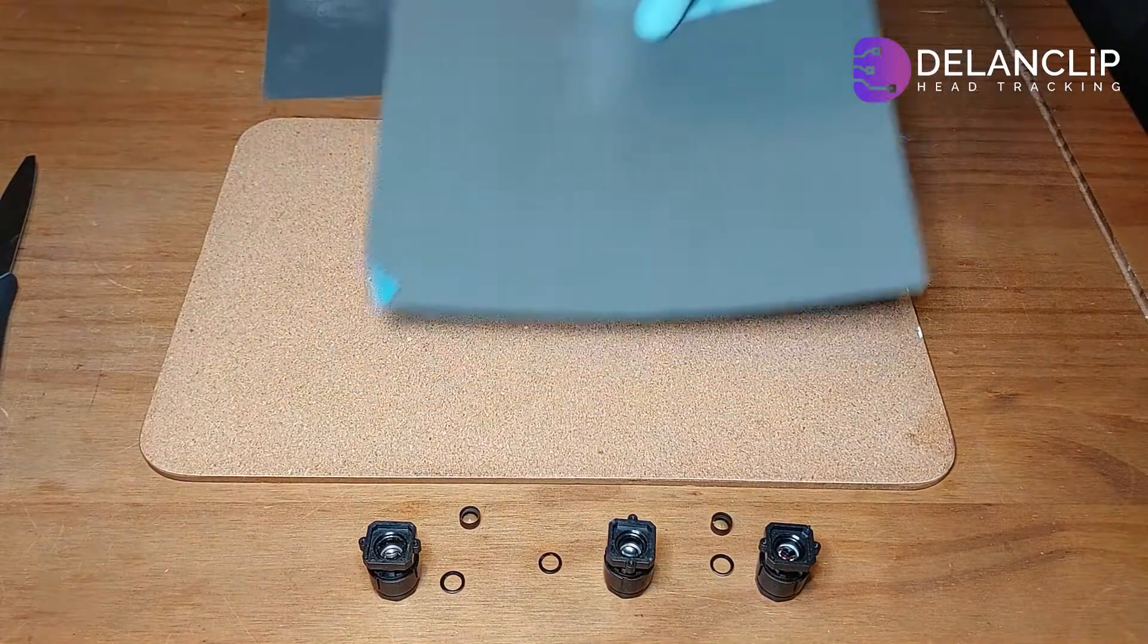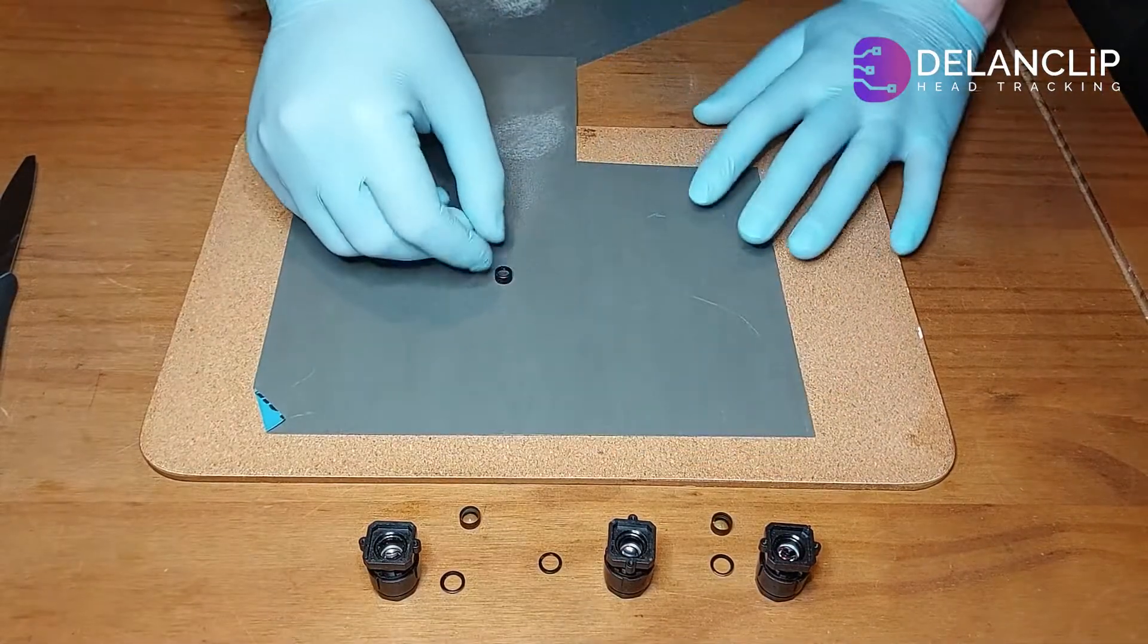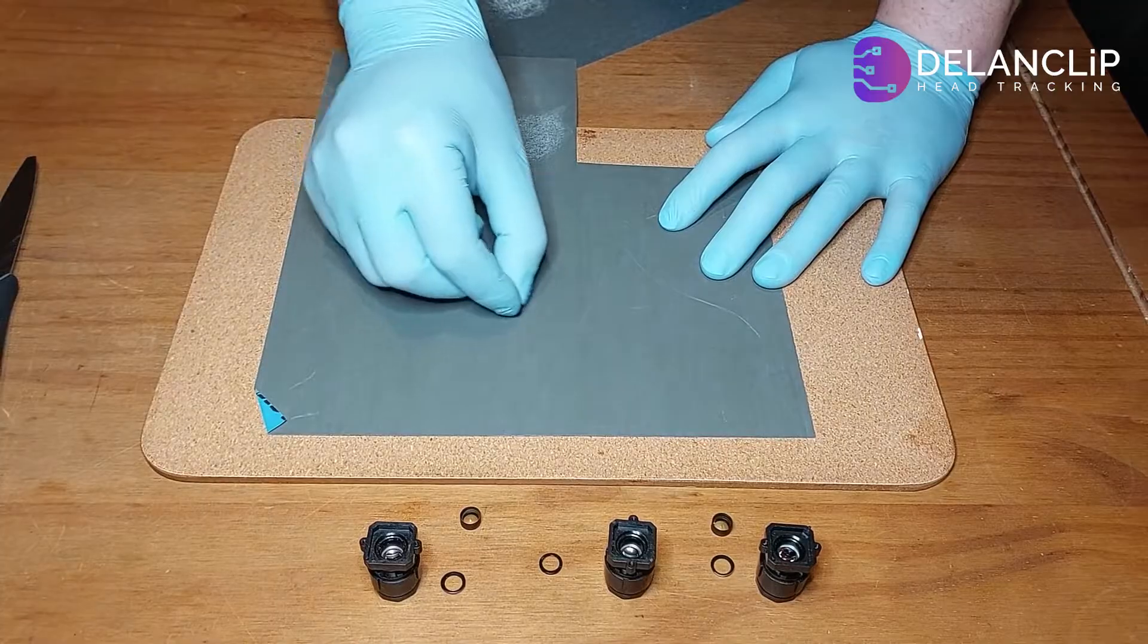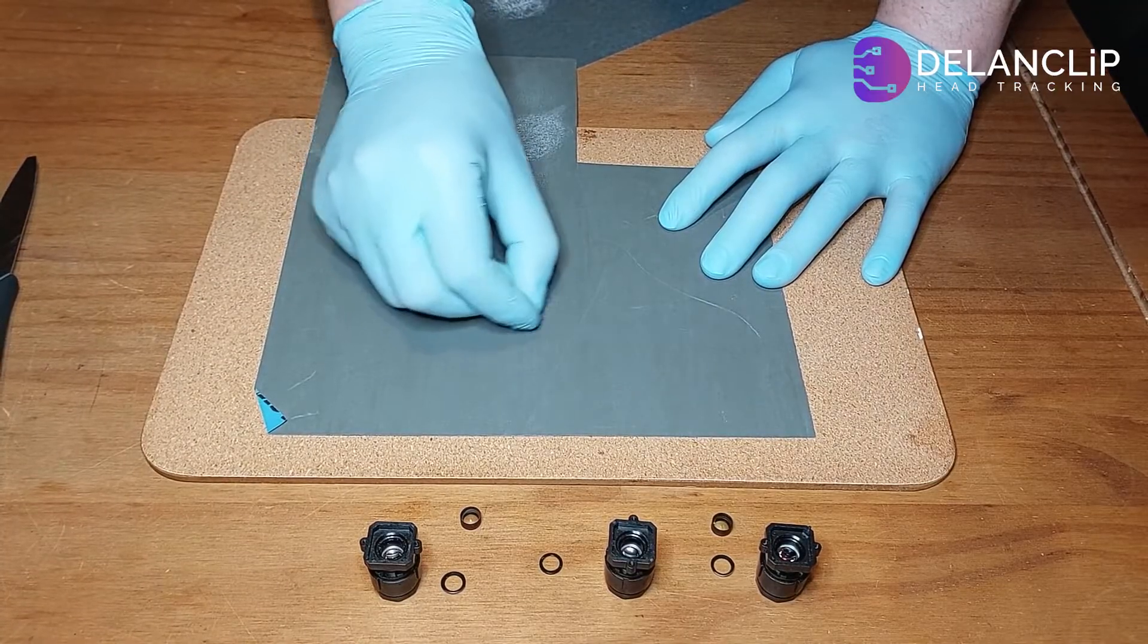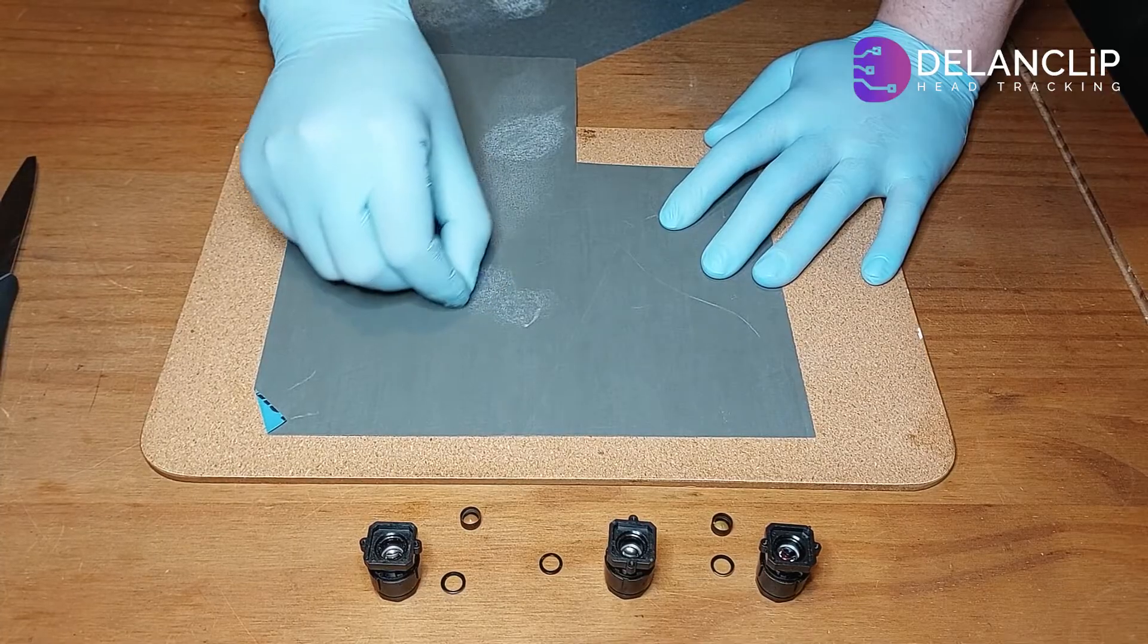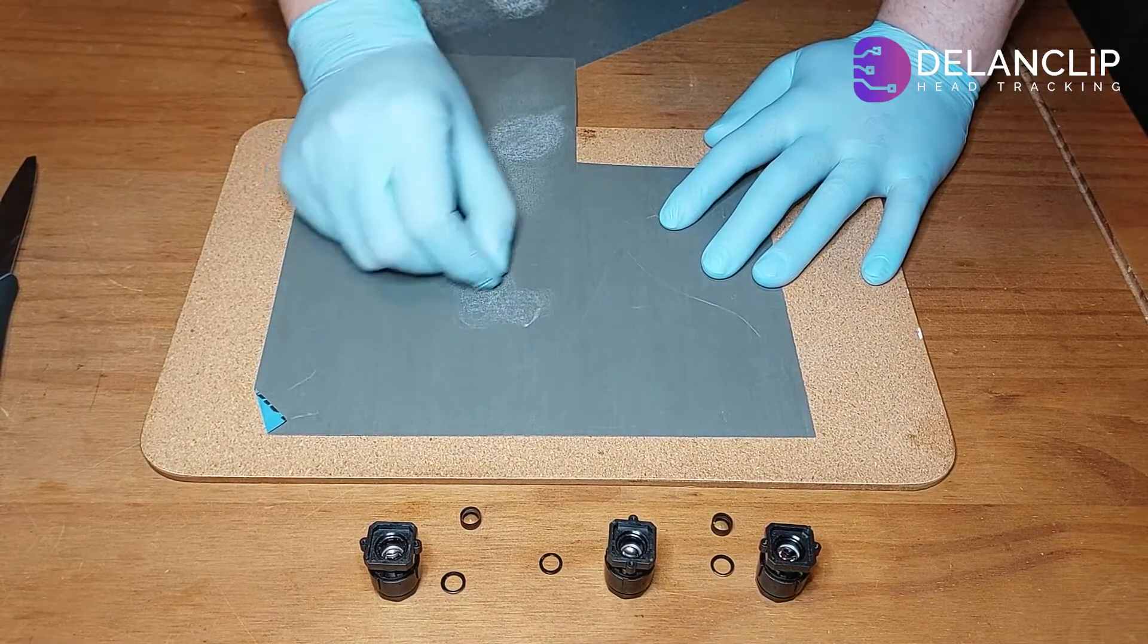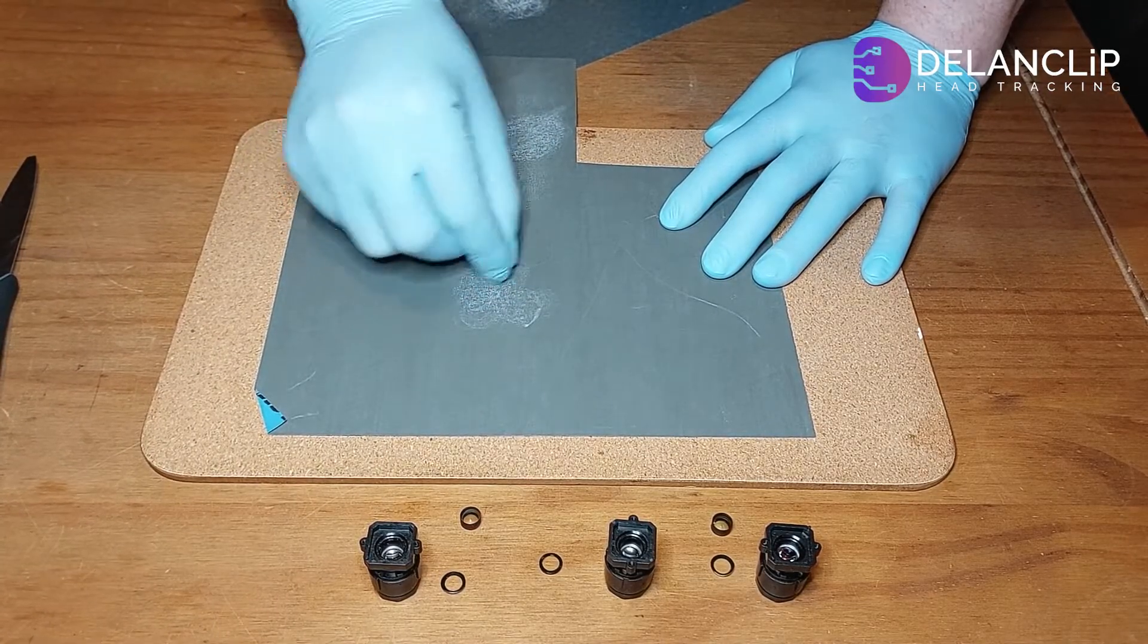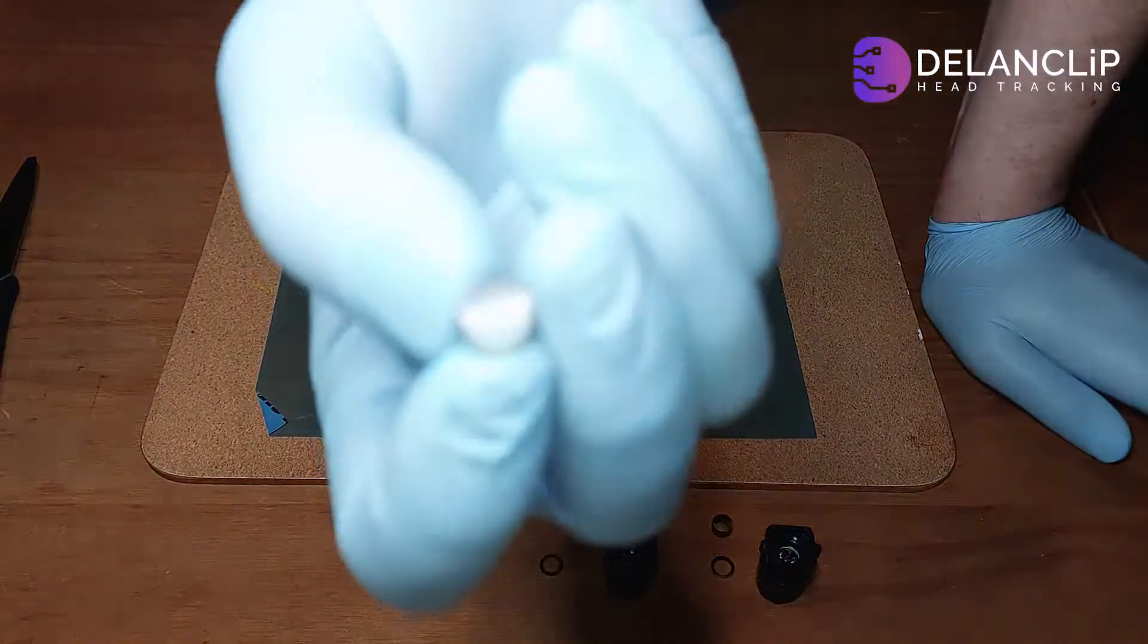Next, switch to 2000 grit sandpaper for further refinement, continuing the circular motions. This step will make the surface clearer.